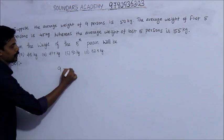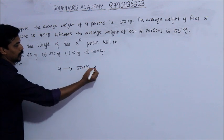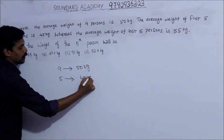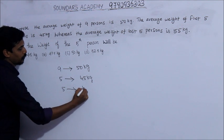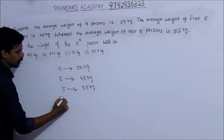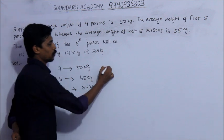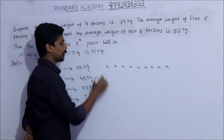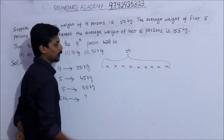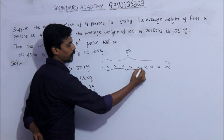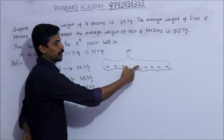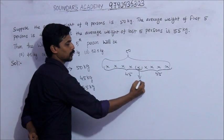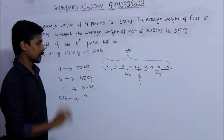The average weight of 9 persons is 50 kg. The average weight of the first 5 persons is 45 kg, and the average weight of the last 5 persons is 55 kg. We have persons 1, 2, 3, 4, 5, 6, 7, 8, 9. The first 5 are persons 1 through 5, and the last 5 are persons 5 through 9. The 5th person is the common person between the two groups.